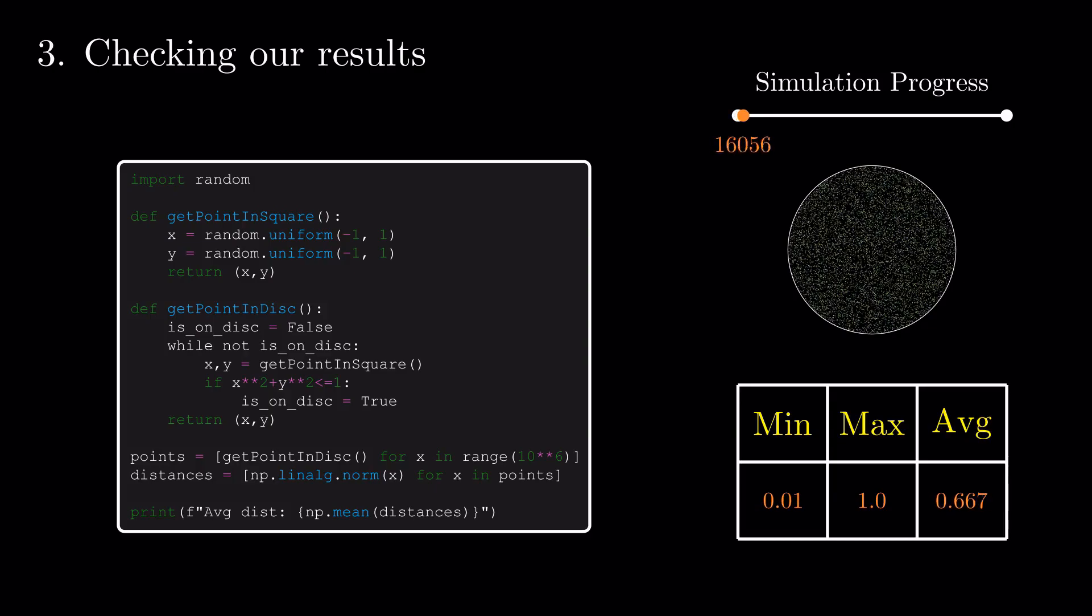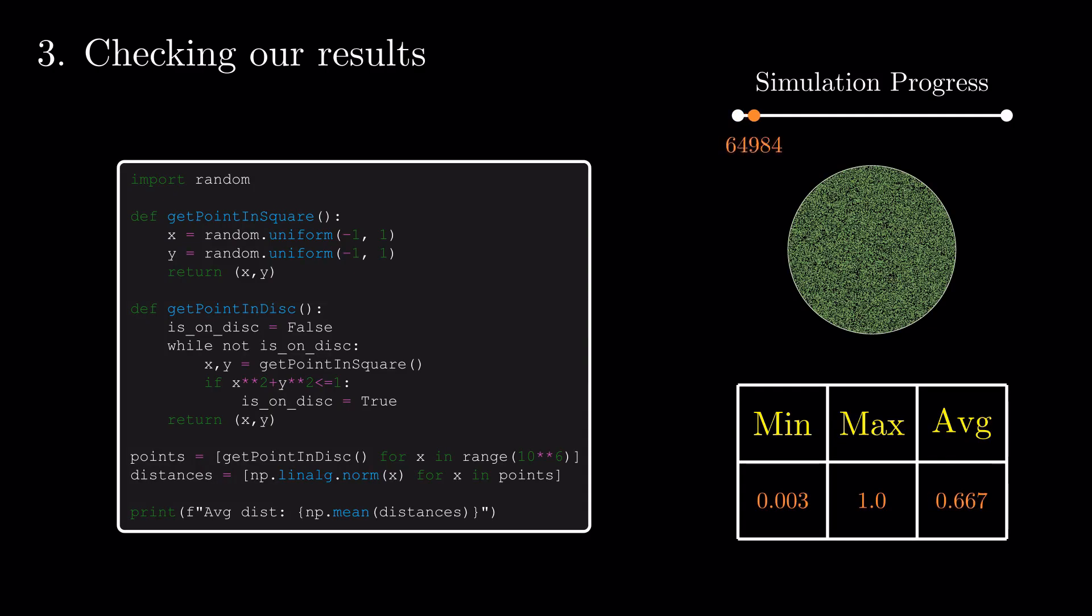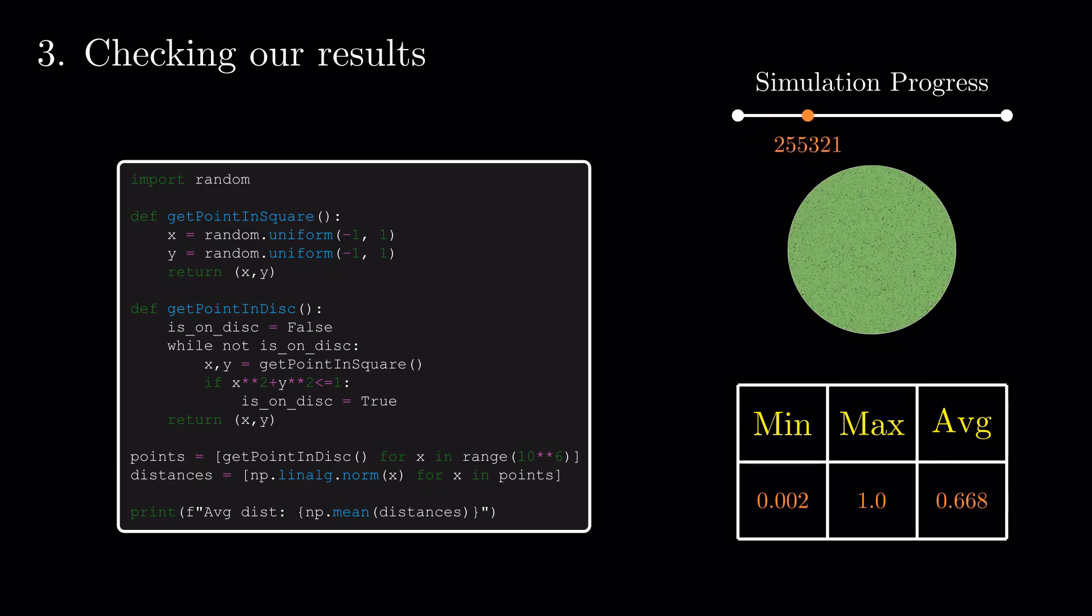As an exercise, you can attempt to prove that this approach yields uniformly random points inside the disk. An alternative way to do this is to use polar coordinates. But, be careful when choosing the distribution of the radius. It might not be what you expected.